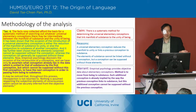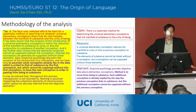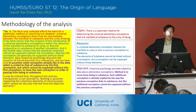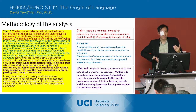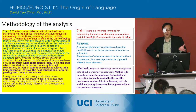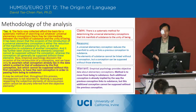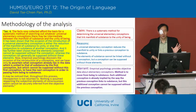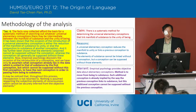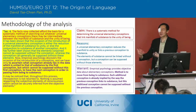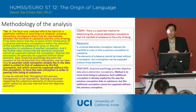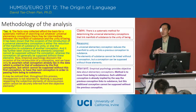He gives the reasons that we can do this — that there is a method for doing this. It's been shown that the occasion of the introduction of a universal elementary conception is either a reduction of the manifold of substance to unity, or else the conjunction to substance of another conception. So this elementary conception either reduces everything to unity or it links a previous conception to the substance.